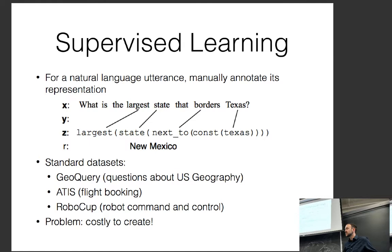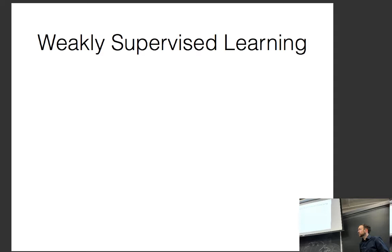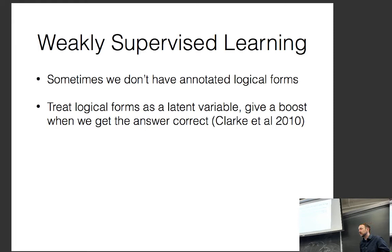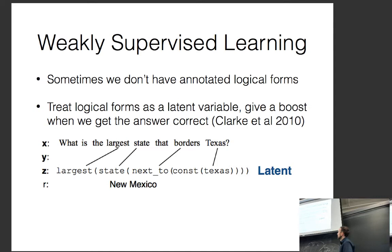One exception might be code generation since there's tons of code, but it's difficult to get code aligned to appropriate English descriptions. It's also very common in semantic parsing to do weakly supervised learning — sometimes we don't have the annotated logical forms, so we treat the logical form as a latent variable and train from only the input and the desired output. For 'what is the largest state that borders Texas,' the answer New Mexico is given; if you get it correct, your output is treated as correct without seeing the meaning representation.